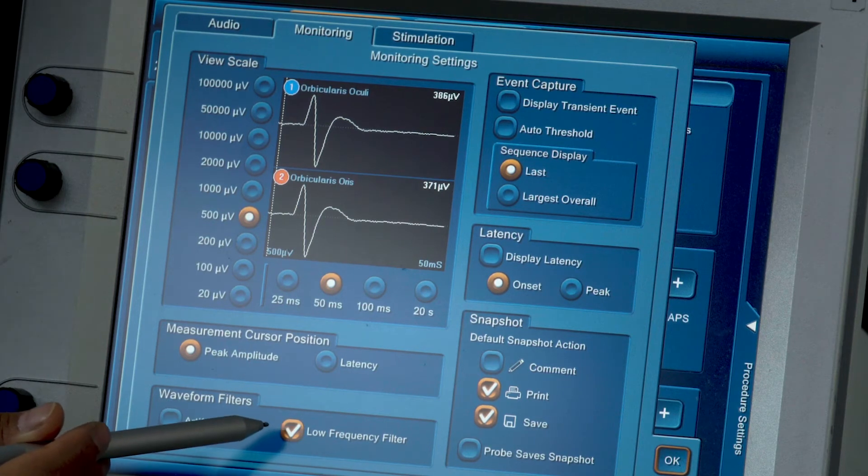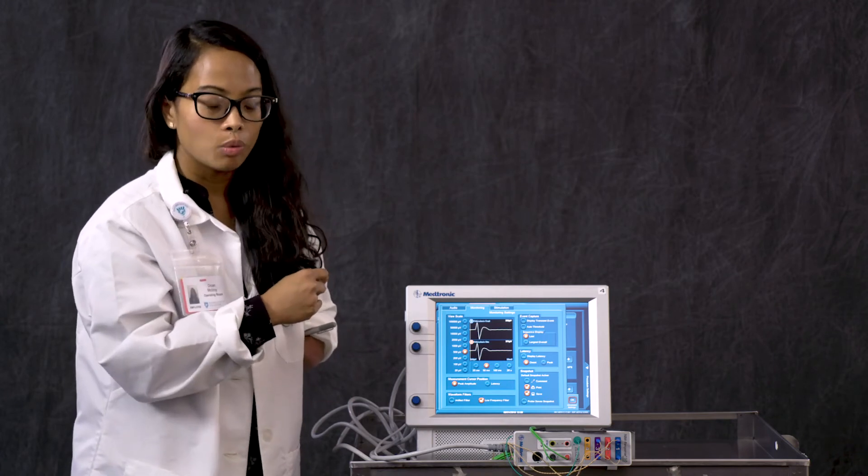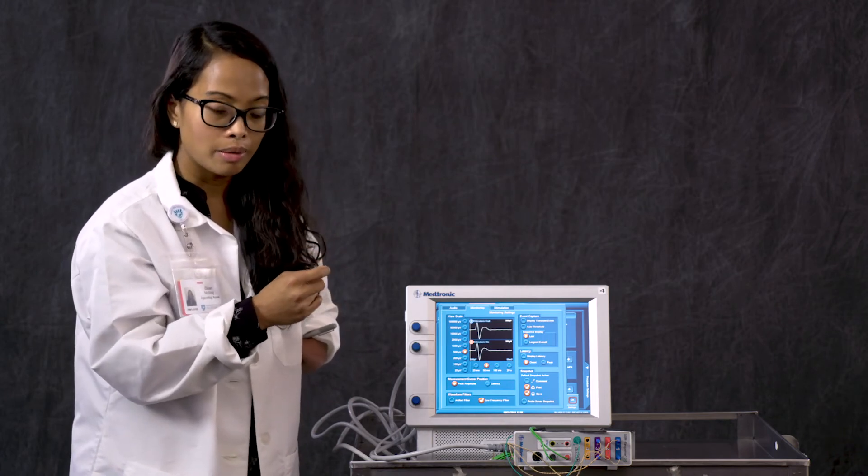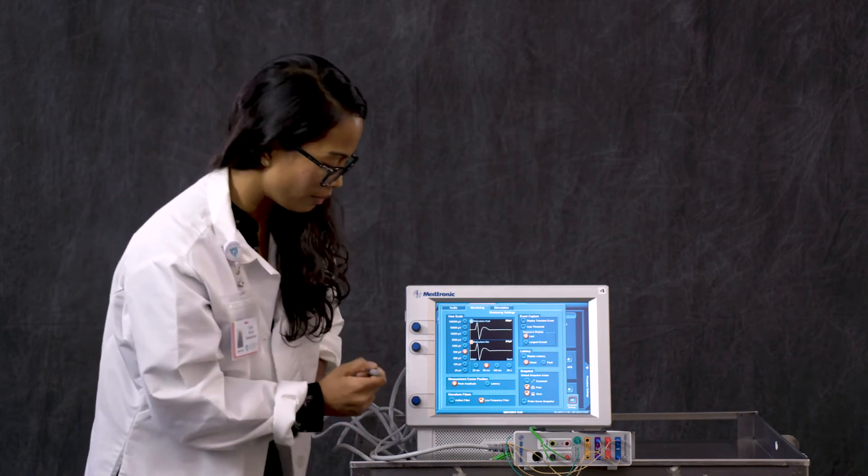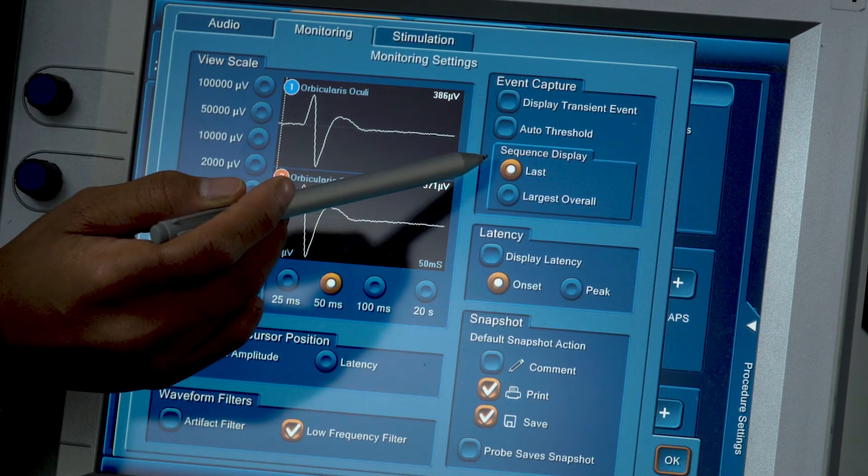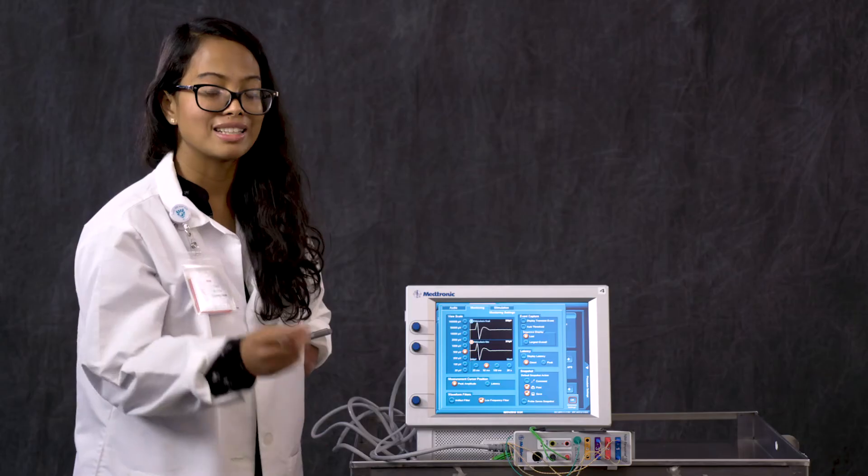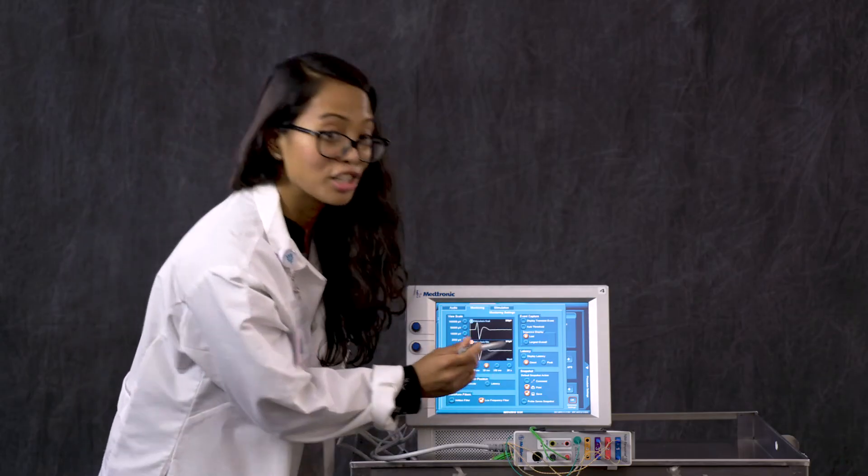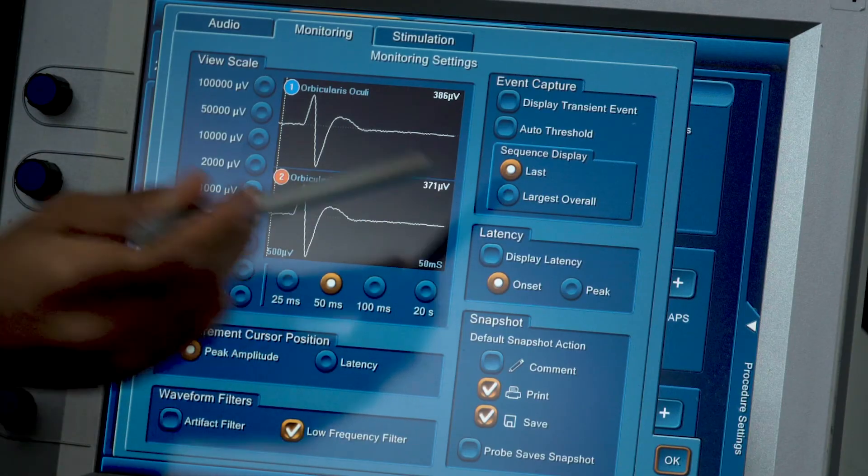For the waveform filter, we have low frequency filter. All this means is that when you're putting the electrodes in, there will be rubbing against the skin, tissue, anything like that. This is on as a filter to stop any of that. Going forward, we are under sequence display. The way that the information is being displayed with your EMG monitoring, it is the last thing that you've seen. It's not the largest overall EMG wave. So we have picked the last thing that you've seen.